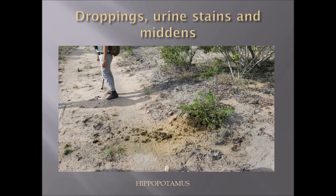Here we have hippopotamus droppings. The hippo has scattered the droppings with its flap-like tail, and the droppings will usually be scattered over a bush like this. It is composed entirely of grass, which is what the animal feeds on.